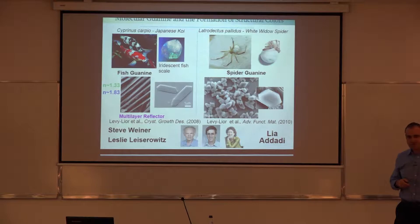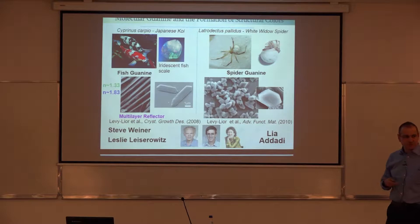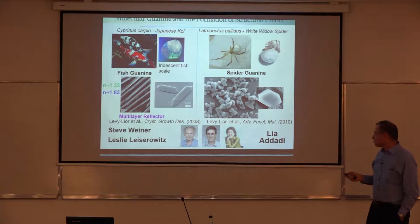The same material also appears in other organisms, such as the white widow spider — not to be confused with the black widow spider. It's much more benign, and it likes to blend against a white background. It uses the same material but now in a random configuration, which means it's a random scatterer, and therefore it appears white.